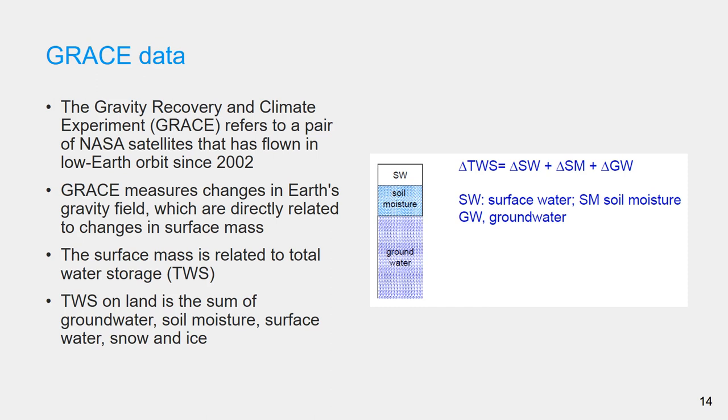The Gravity Recovery and Climate Experiment, GRACE, refers to a pair of NASA satellites that have flown in low Earth's orbit since the year 2002 to measure changes in Earth's gravity field, which are directly related to changes in the surface mass. And the surface mass signal largely reflects total water storage.